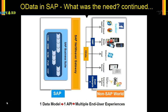The alternative to a point-to-point solution is one data model, one API, and multiple end-user solutions. This means that no matter who requests information — whether from a browser, a mobile device, or any operating system — SAP just needs to build one OData service for one request, and that OData service will provide information to all the requesting clients.